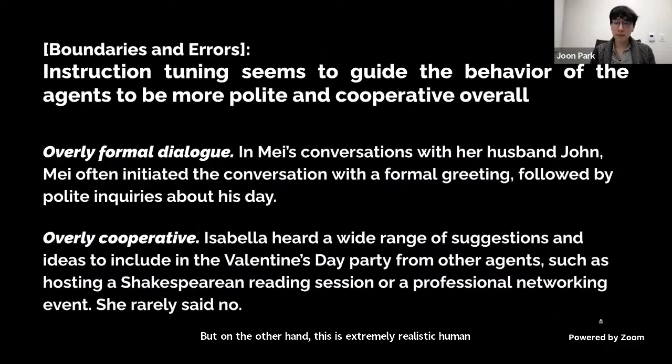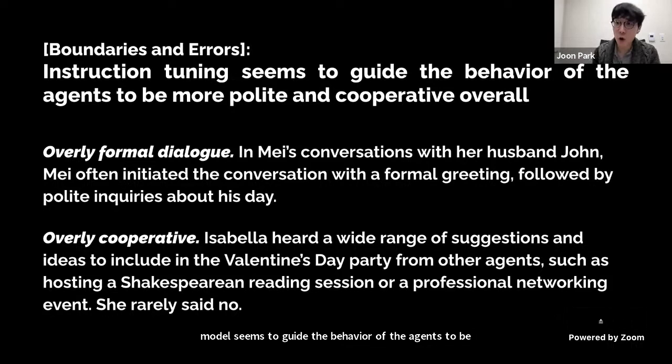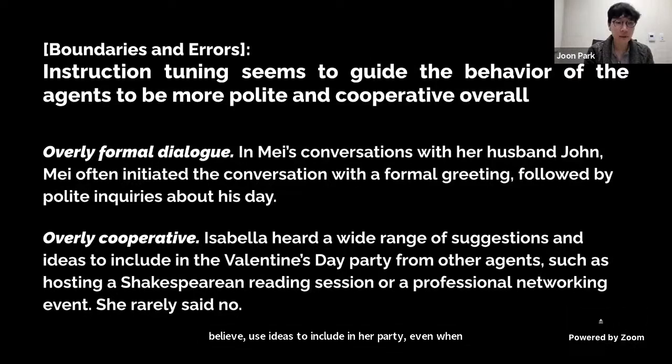There were also notable boundaries in agent behavior: the instruction tuning of the language model guided agents to be overly polite and cooperative even with family. They always greeted family members formally, and Isabella never really refused ideas for her party even when those ideas didn't align with her identity.